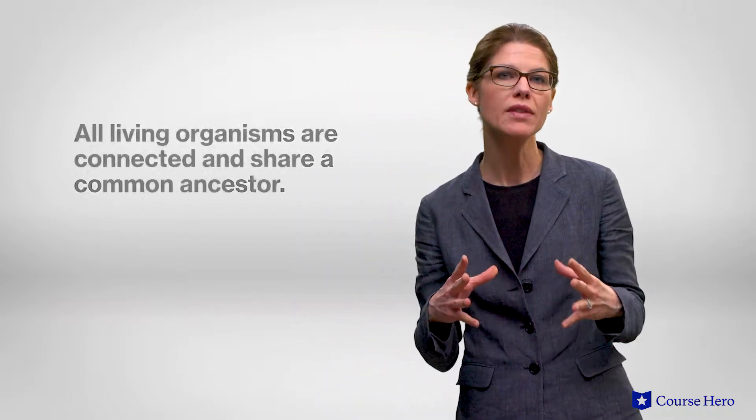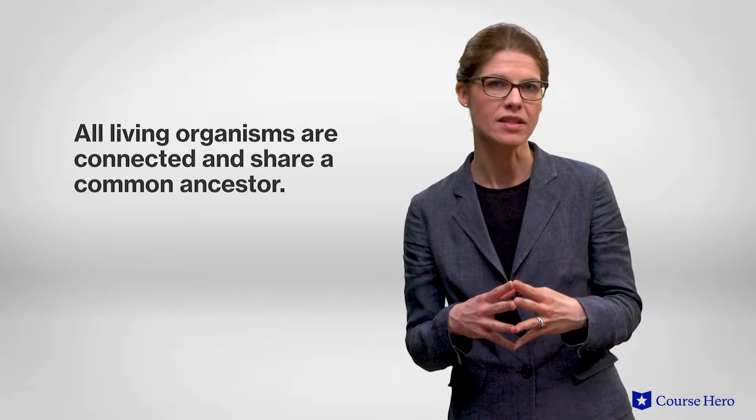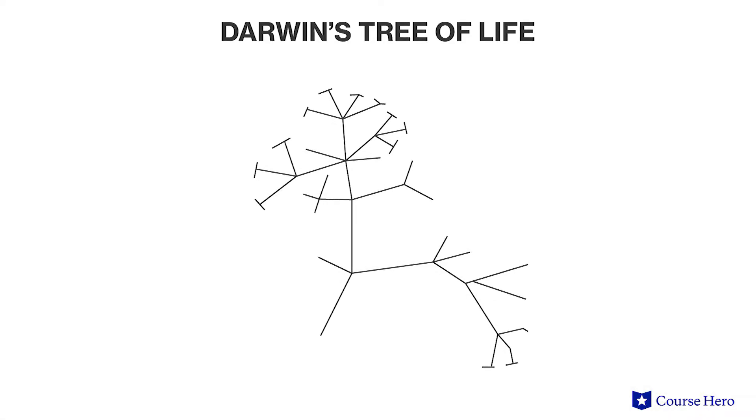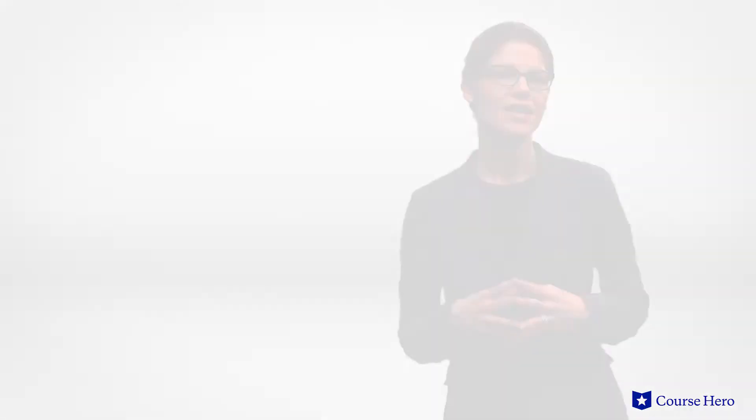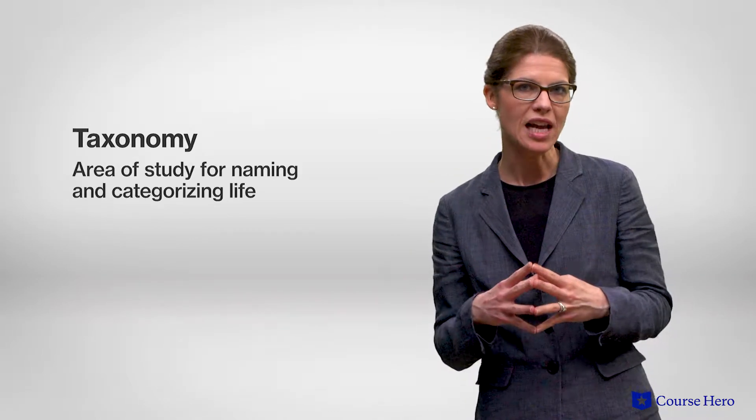Life is incredibly diverse and includes millions of species, most of which we have yet to identify. Charles Darwin's evolutionary theory used a tree of life to explain how all living organisms are connected and how they all share a common ancestor, represented by the trunk in the tree of life. The area of study for naming and categorizing life is called taxonomy.